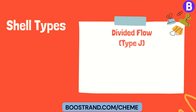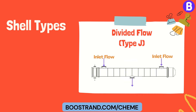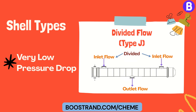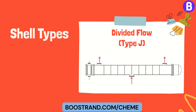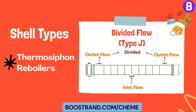Divided flow, Type J: this is another shell type where either the inlet flow is divided while the outlet flow exits in one nozzle, used in condensation applications that require a very low pressure drop — in this case the shell type is J21. On the other hand, if the outlet flow is divided, which is commonly the case for thermosyphon reboilers, the shell type is J12.